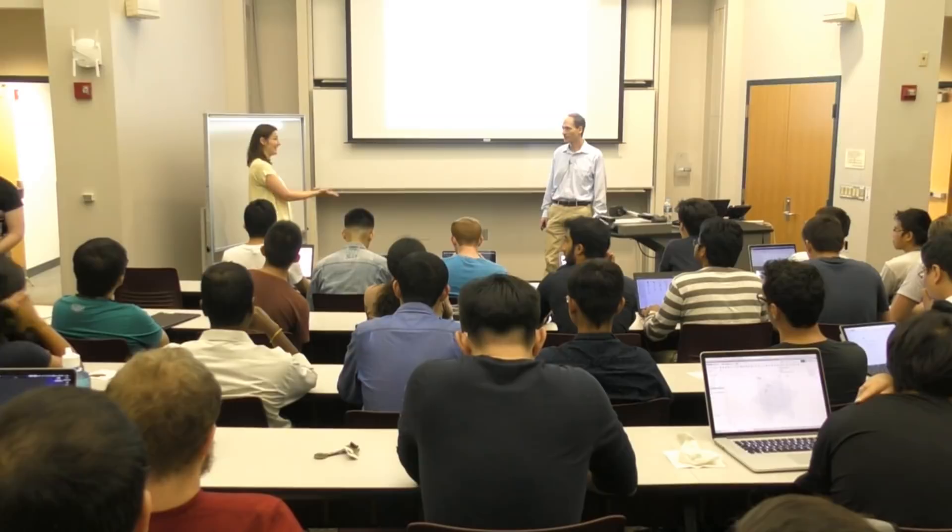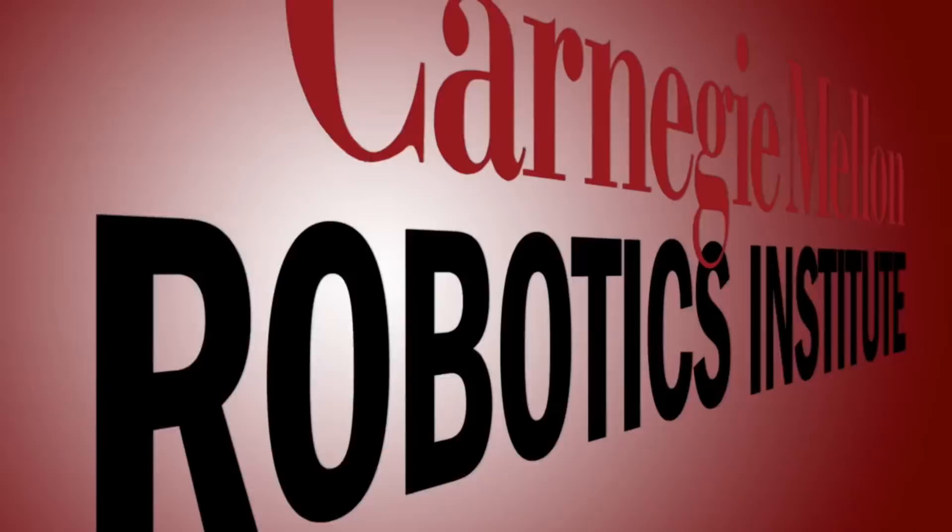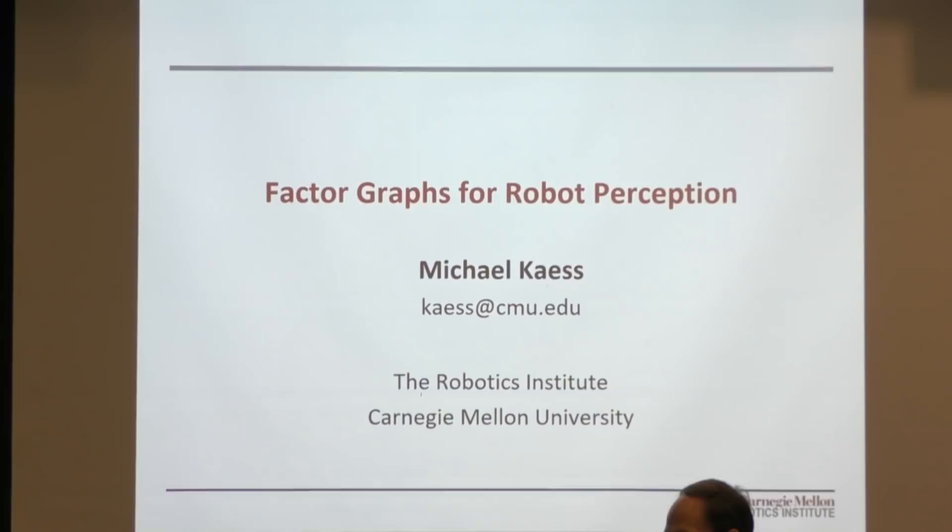It's my pleasure to introduce today's seminar speaker, Michael Case. Michael is an assistant professor here at the Robotics Institute at CMU, working on probabilistic methods for robot perception. In particular, he focuses on efficient algorithms for robot localization, navigation, and mapping. Before joining CMU in 2013, he worked as a postdoc and research scientist at the computer science and artificial intelligence lab at CMU. He earned his PhD at Georgia Tech and was one of two runner-ups for the 2012 VOLTS dissertation award for the best US PhD thesis in robotics and automation. He will talk today about his work on factor graphs for robot perception.